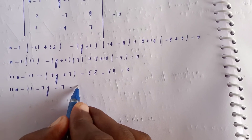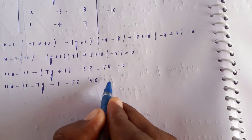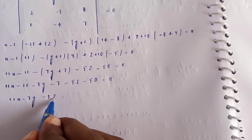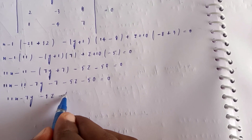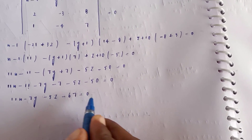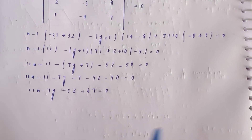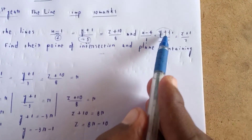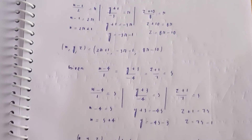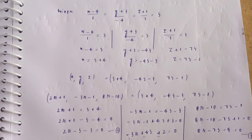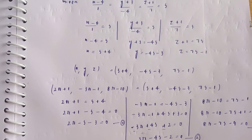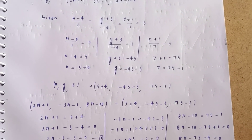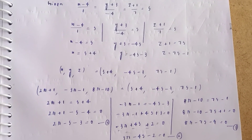The required plane equation is 11x − 7y − 5z − 50 = 0. The lines are coplanar and the plane containing them has been found. The point of intersection can be obtained by substituting r = 2 into Line 1 parametric equations. Simple calculation — the final plane containing the lines is confirmed.